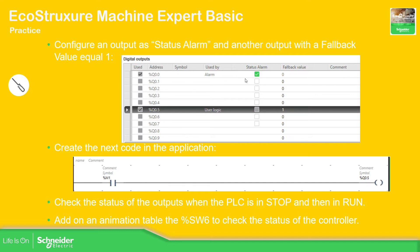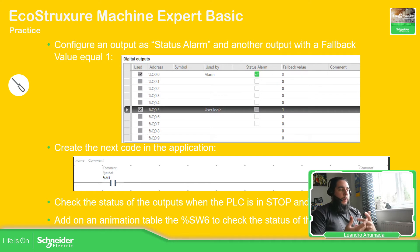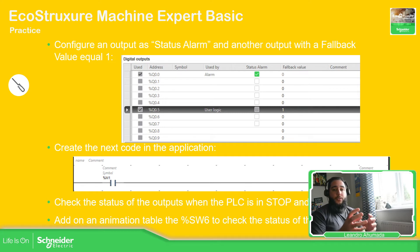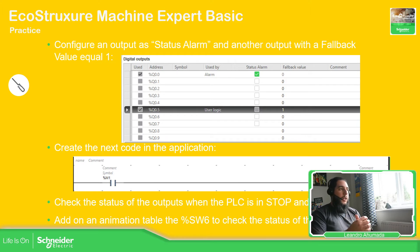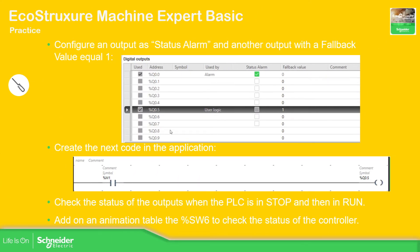The idea now is to configure the digital outputs of the controller. We're going to assign one output as a status alarm, and use another output with a fallback value of one. The fallback value is like a safety state — imagine you have a valve that always needs to be in the true state for safety. When the PLC goes to stop for any reason, you can guarantee the valve will be in the safe position. We'll also add SW6 to check the status of the controller.